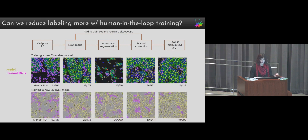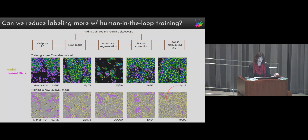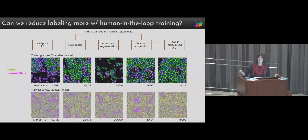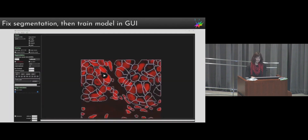We saw a similar thing training a LiveCell model — you have to label maybe 52 out of 127 on the first image, but by the last image after training on four you're labeling far fewer ROIs: 18 out of 293. If you had to label all 293 you wouldn't be happy. One nice thing about retraining the model as you go in the loop is that you can figure out when you want to stop — 'okay, I've labeled enough' — whereas with traditional approaches people label a ton of images without realizing how few they actually need, wasting time.